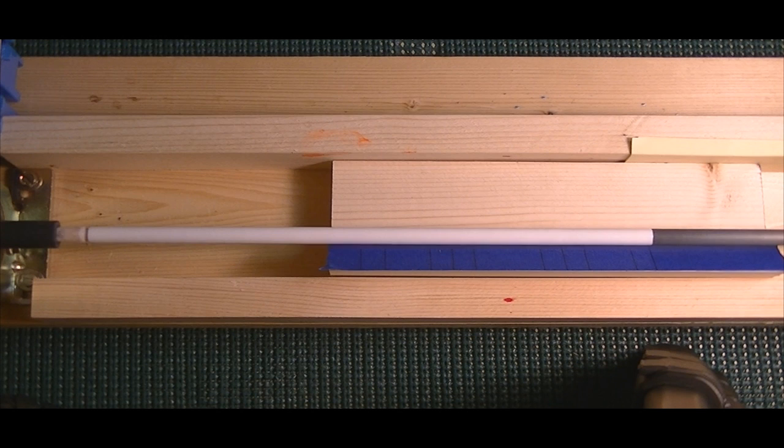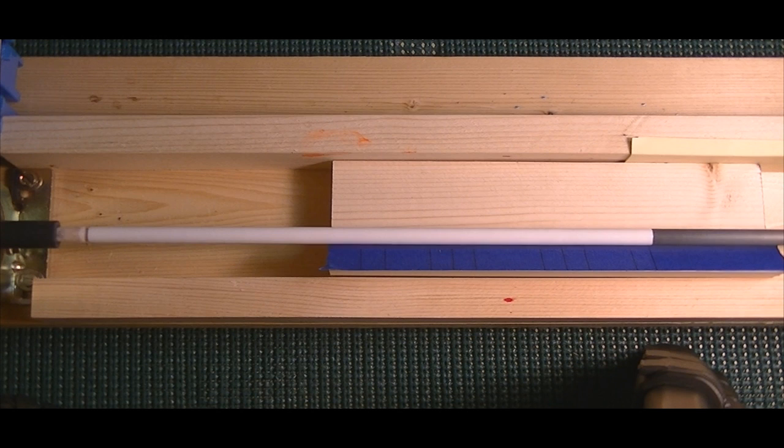I use Krylon spray paint for the base white on the back, which you can use whatever color you want, but I'm using white in this case. And then Tester's model paint is what I use for the actual cresting stripes.